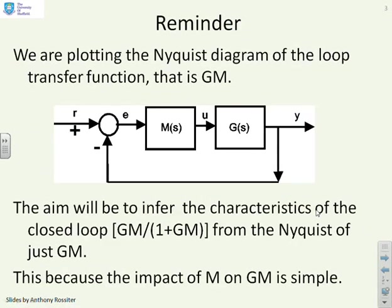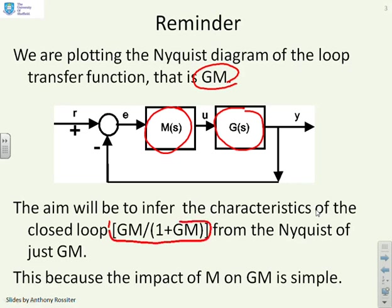As a reminder, when we were plotting the Nyquist diagrams, we plotted the Nyquist diagrams of gm — m the compensator, g the system. The key thing is we did not do the Nyquist diagram of the closed-loop transfer function gm over 1 plus gm. We're doing the Nyquist diagram of just gm, and you must remember that. This is good because the impact of the compensator m on the Nyquist diagram is simple — we've just got multiplication.